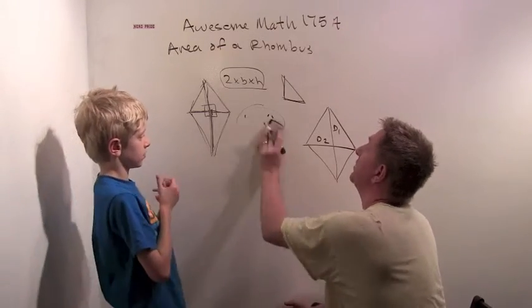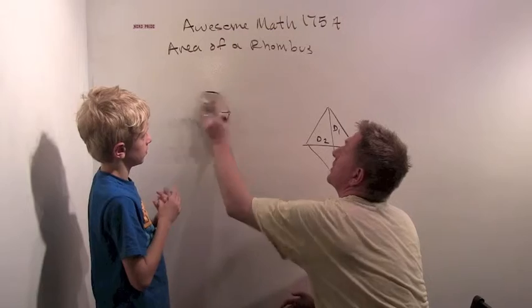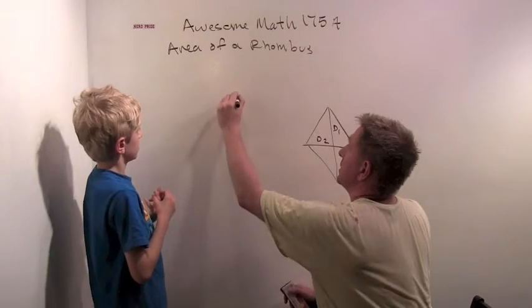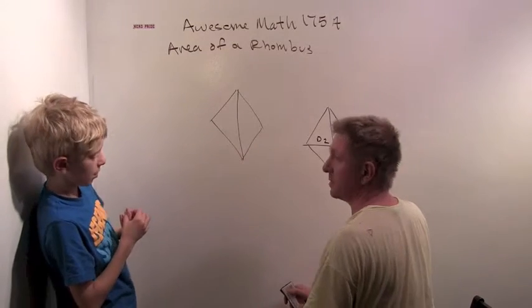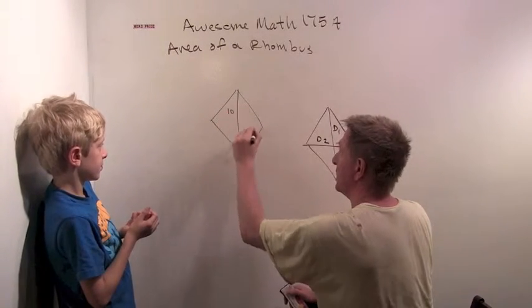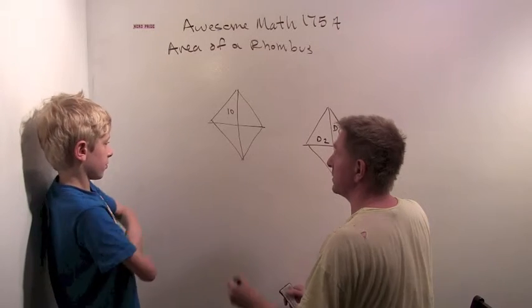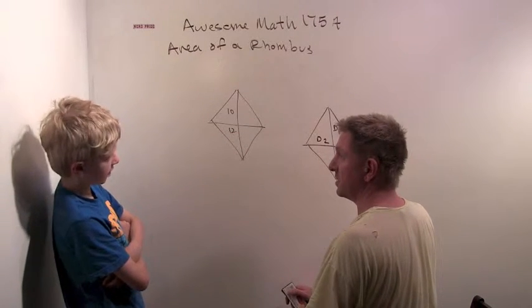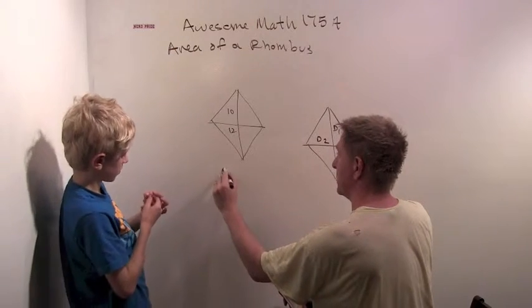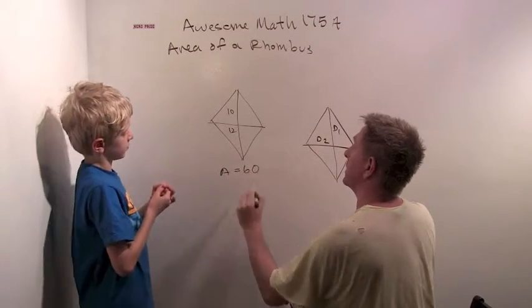Because if I give you a rhombus, and I say... You want to just make up some numbers? How long is this diagonal? Maybe ten. And that diagonal is ten, and this diagonal is... Maybe twelve. Twelve. Okay. What's the area of that rhombus? Well, it's sixty. Sixty.